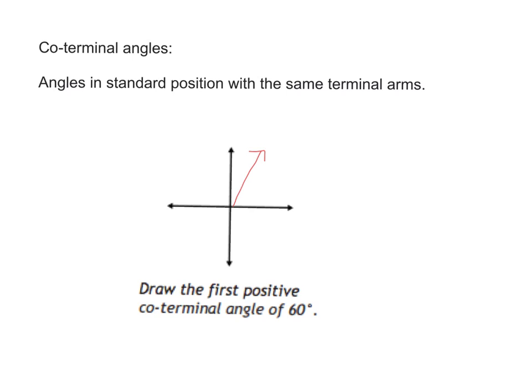But 60 degrees, that might be a bit bigger than 60, but it's around there, right? That's 60 degrees. A coterminal angle has the same terminal arm, so I'm going to draw it in.